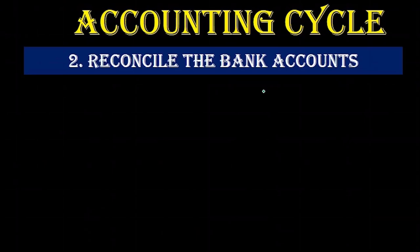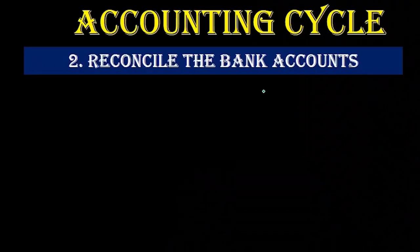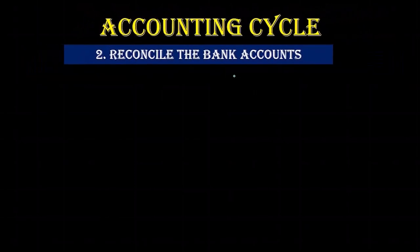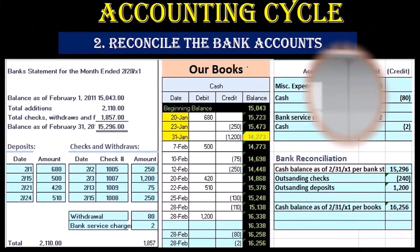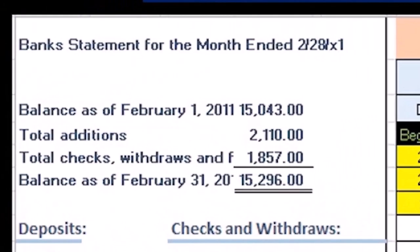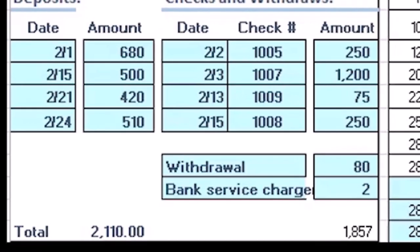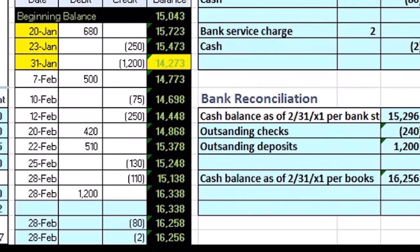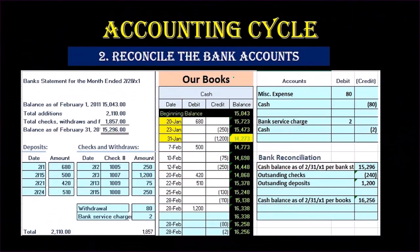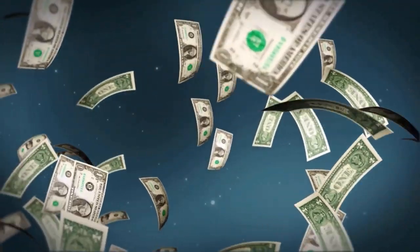Once we have all the transactions recorded, cash is so crucial and involved in so many transactions that it's a huge internal control for us to reconcile the bank accounts. We don't want to go to the adjusting process until we've reconciled the bank accounts. Once we're done with the month, we compare the bank balance of cash to our balance of cash, determine exactly what the differences are, make any adjustments needed, and identify outstanding checks and outstanding deposits. That gives us assurance that our cash transactions are recorded correctly.